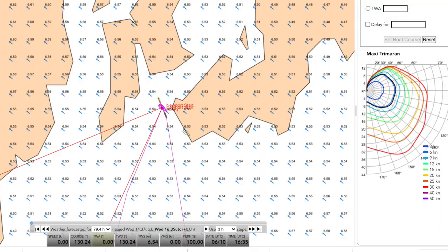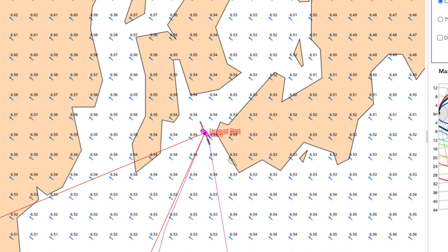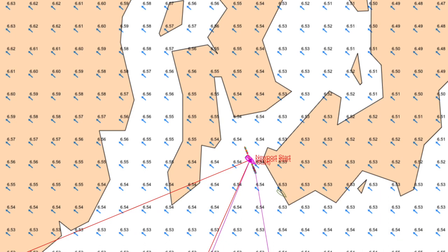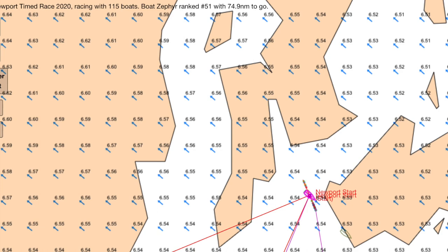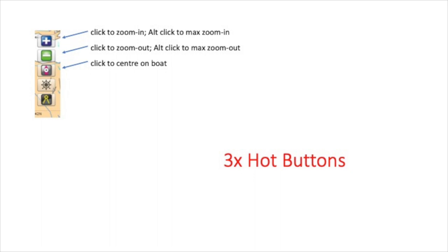You're looking at a chart of the race area. Your boat is sitting on the starting mark, and in the top header ribbon it tells you when the start is and how many miles to go. Click on the chart and drag to move it about. On the left you'll see five buttons — hot buttons. The top two are zoom: click plus to zoom in, alt-click for max zoom in; click minus to zoom out, alt-click for max zoom out. The little boat icon below those two — click that and the page centers on your boat.